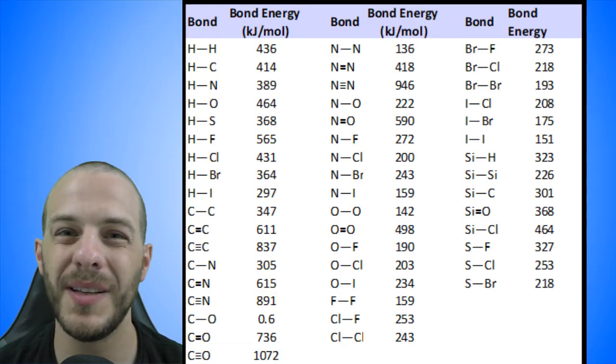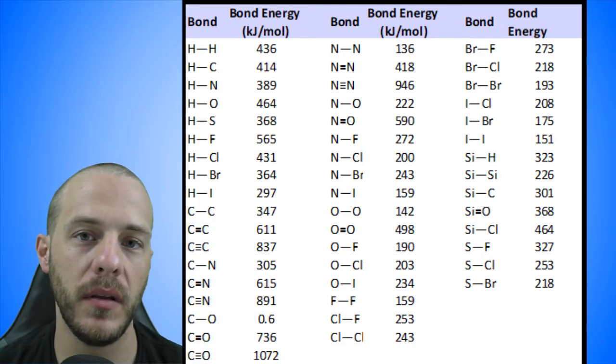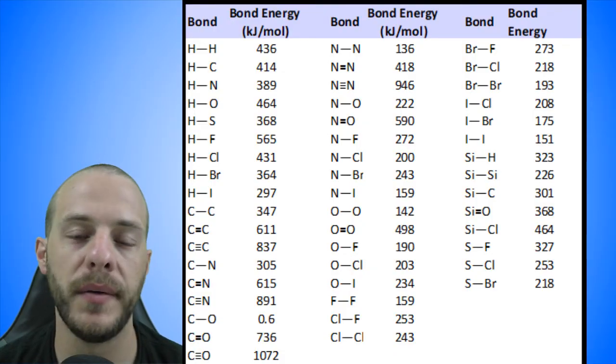The other important observation from this table is that every single one of these bond energies are positive — none of them are negative. Why do you suppose this is the case? I would sincerely invite you to pause the video and think on this for a second. Bond energies are always positive because atoms lower their potential energy by forming a chemical bond — that's why bonds form in the first place. To break an existing chemical bond is to convert a system of lower potential energy to a system of higher potential energy, and it will always require an input of energy. In other words, the breakage of chemical bonds is endothermic — it requires energy.